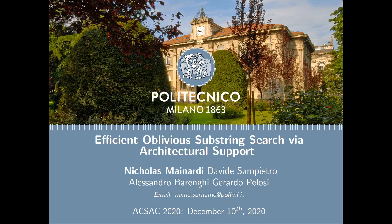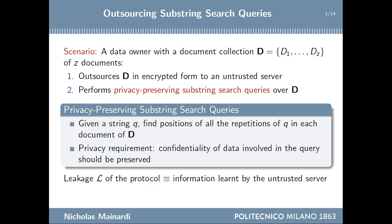Hello everybody. I'm Nicolas Maynardi from Politecnico di Milano and I'm going to present this work about the design of an efficient oblivious abstract search protocol via architectural support. In this work we consider a scenario where there is a data owner with a set of documents, called a document collection, over which the data owner wants to perform substring search queries.